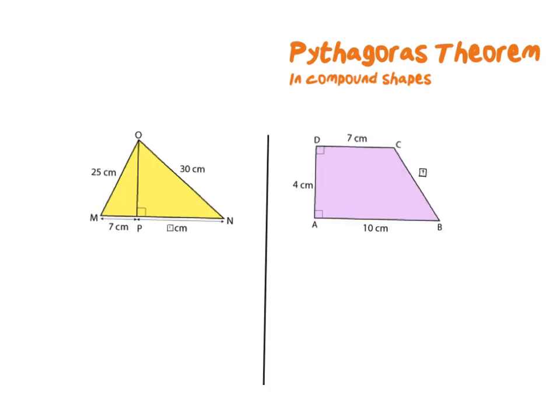Sometimes we can also get compound shapes where we have either two triangles together or a square or a rectangle together with a triangle. In this case it's important to break the shape up into different parts. Always start in the triangle that has the most information or in the shape that has the most information.